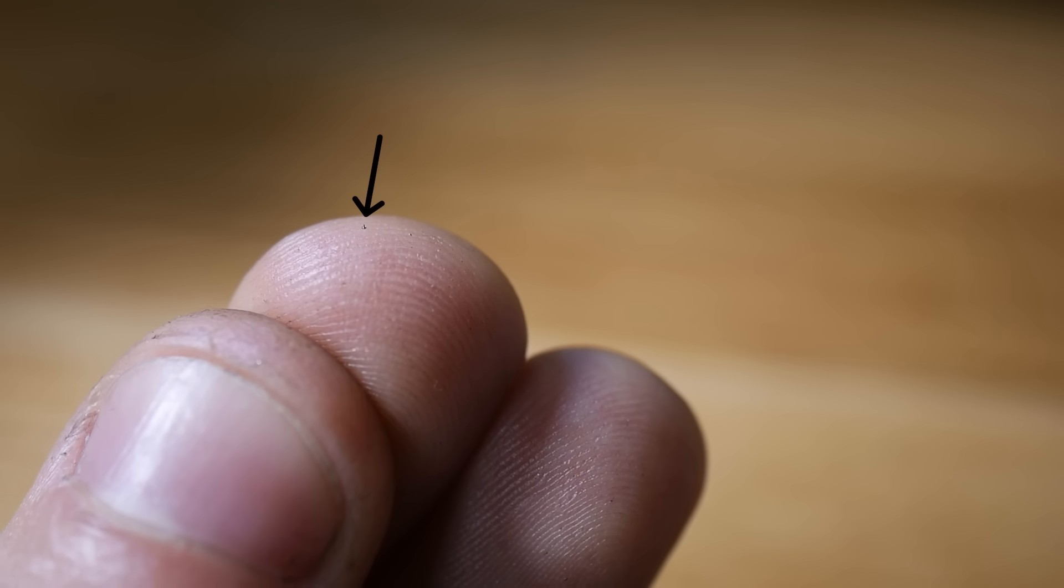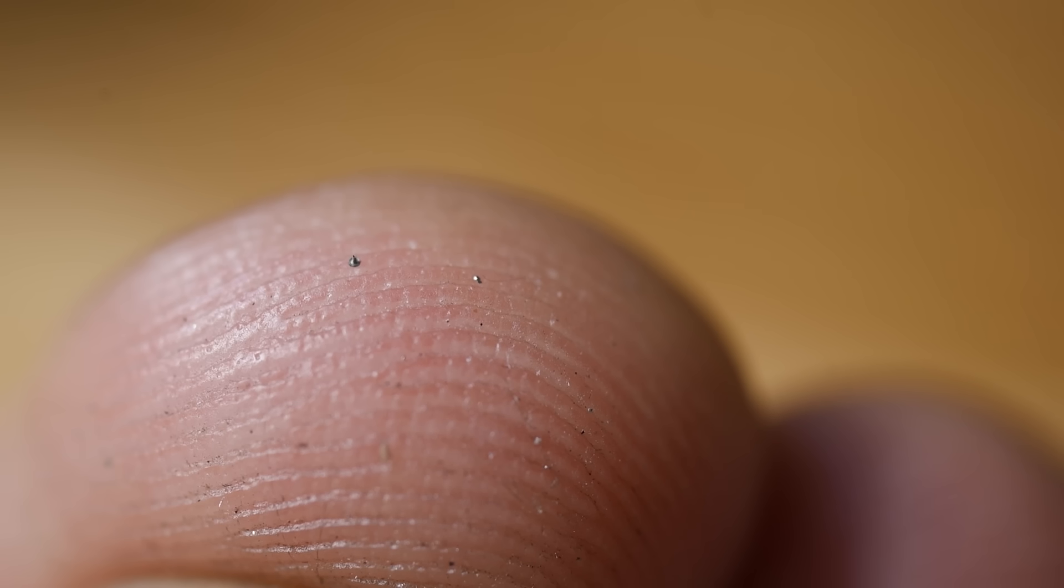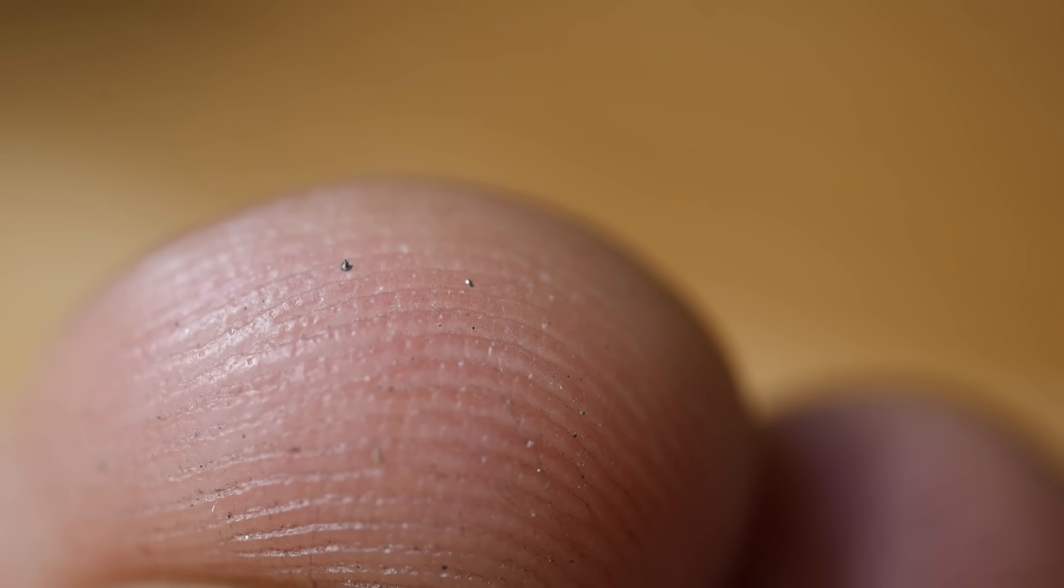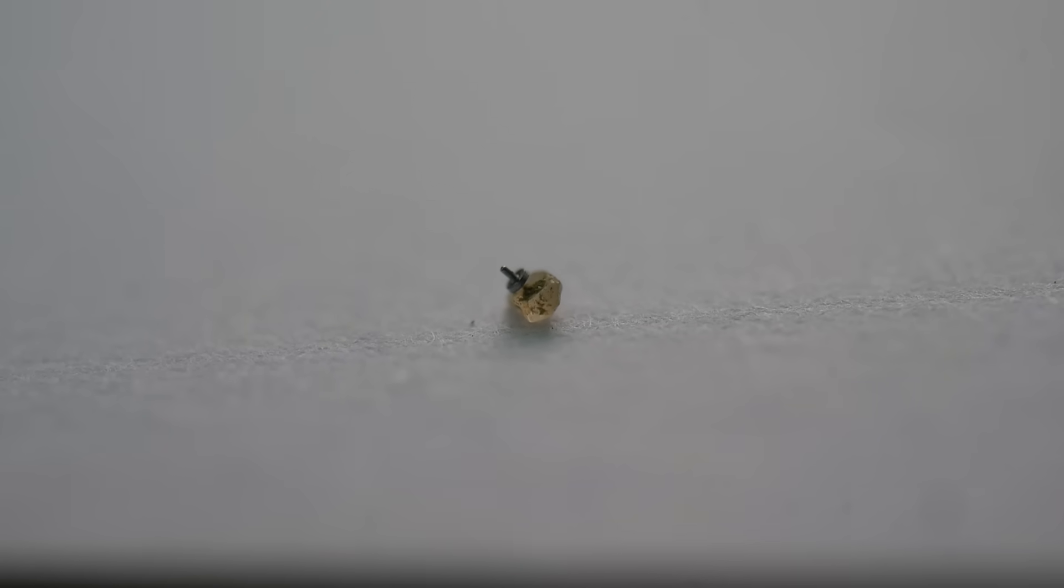This is a prototype rotor for the world's smallest handmade electric motor. It's the largest component in the assembly and I made it on a watchmaker's lathe. Here it is sitting on a grain of sand.